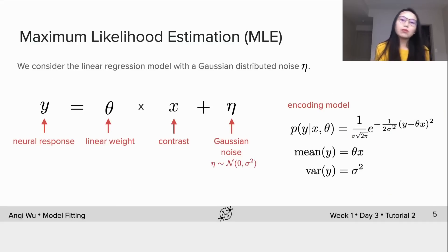Formally, we consider the linear regression model with a Gaussian distributed noise eta with zero mean and variance equal to sigma squared. We can write the encoding model p(y|x, theta) as this Gaussian form. The larger the sigma squared value is, the noisier the data is. Therefore, if we have a very noisy data set, we would assume a large sigma value and vice versa.